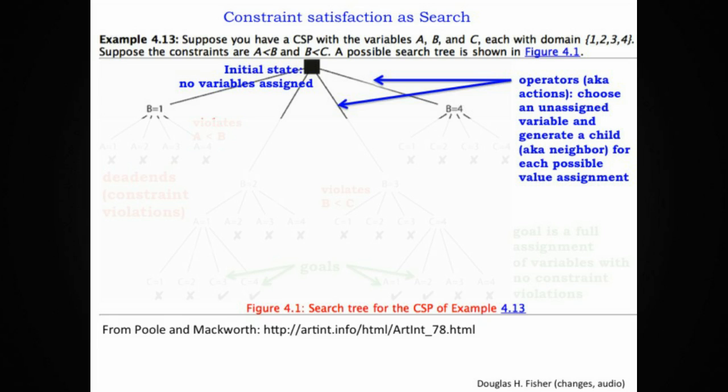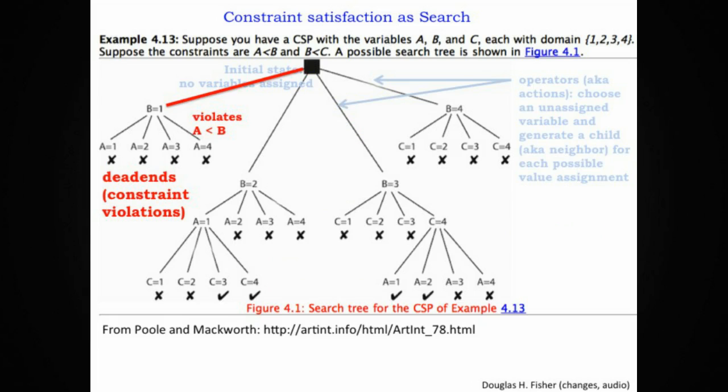We can do this by the kind of search that we've already studied. In this case, we have an initial state in which no variables have been assigned. The operators in this search framework correspond to choosing an unassigned variable and then generating a child for each possible value assignment to that variable. When we do that repeatedly at each level, thus building up a search tree or search graph, we're going to encounter some states that violate constraints. Those states that violate at least one constraint are dead ends in this search space.